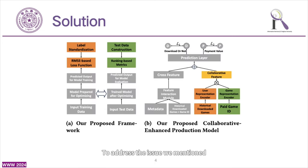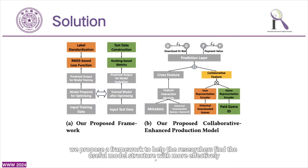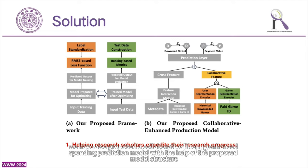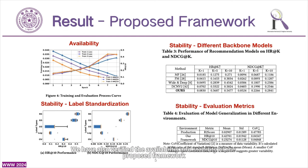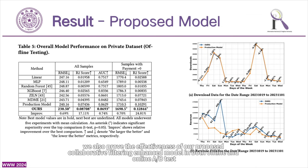To address these issues, we propose a framework to help researchers find useful model structures more effectively. We have also proposed a collaborative filtering-enhanced spending prediction model with the help of the proposed model structure, and verified the availability and stability of the proposed framework. We also prove the effectiveness of our proposed collaborative filtering-enhanced model in both offline and online A/B tests.